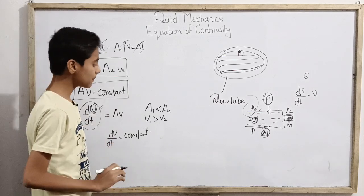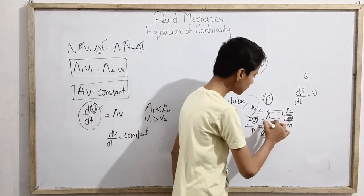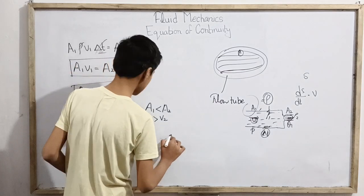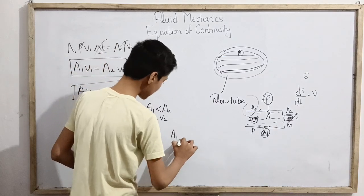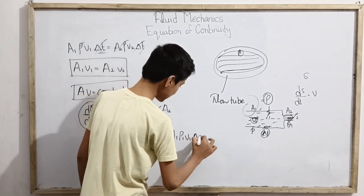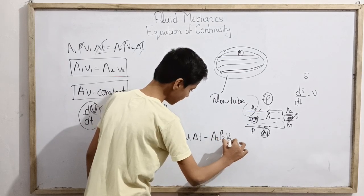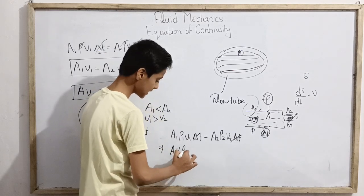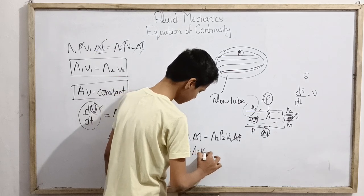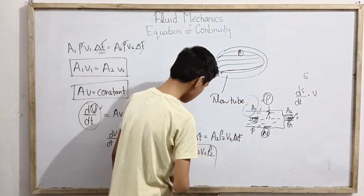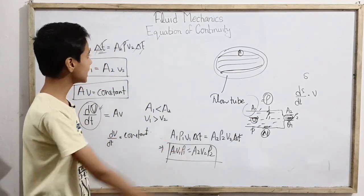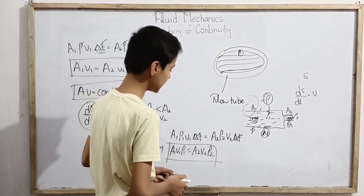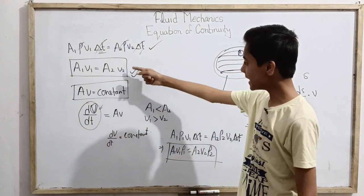For compressible fluid, the density rho can vary, so we have rho1 and rho2. In that case we write the equation as A1 times rho1 times V1 times delta-t equals A2 times rho2 times V2 times delta-t. Cancelling delta-t from both sides, we get A1 rho1 V1 equals A2 rho2 V2. We cannot cancel rho here because rho1 may not equal rho2. This is the equation of continuity for compressible fluid, but in most cases fluid is incompressible.